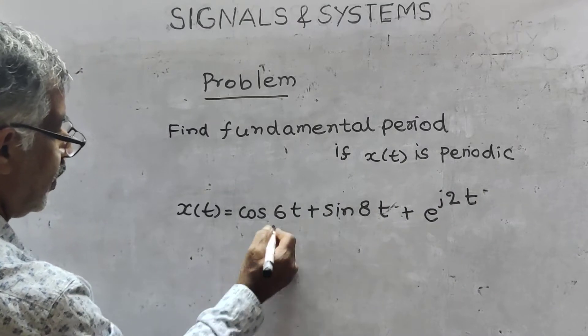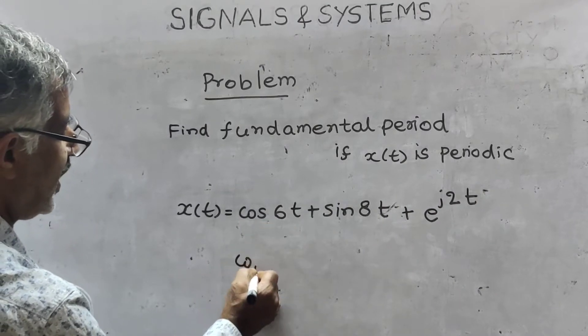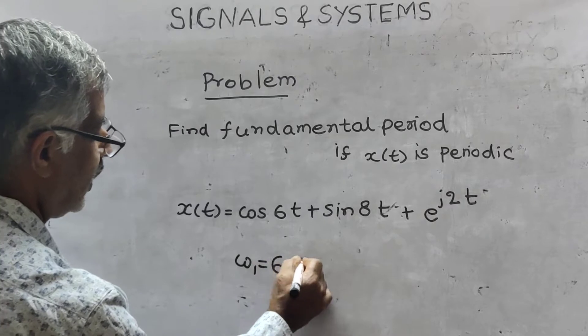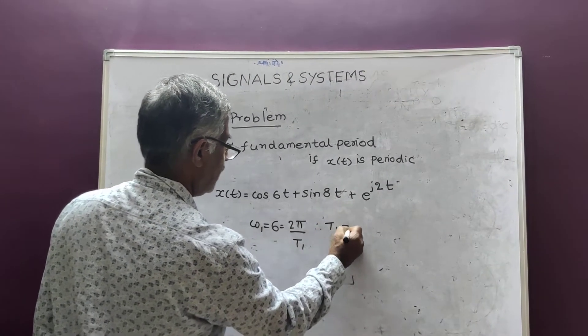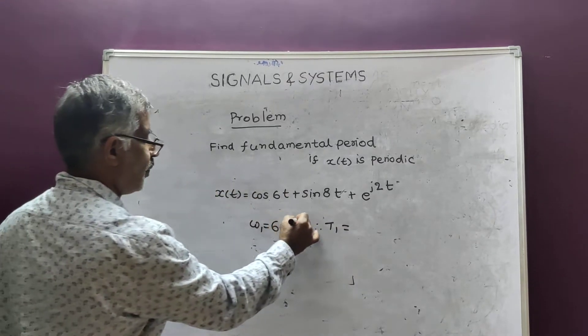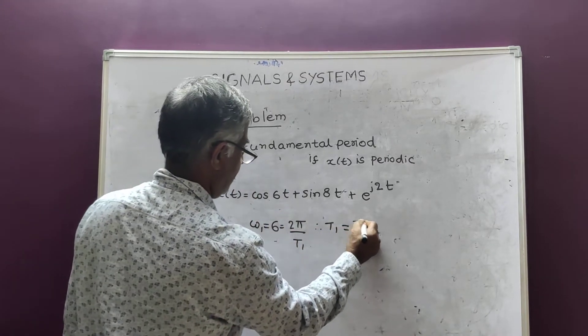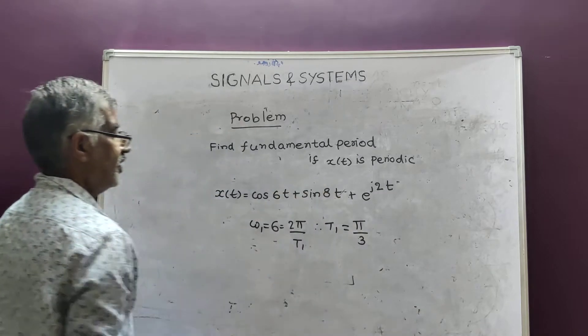Find t1. Omega 1 equals 6. That is 2π by t1. Therefore what is t1? t1 is equal to 2π by 6, that is π by 3. Second one.